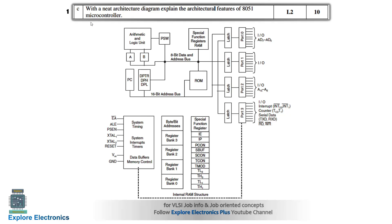The 8051 microcontroller is an 8-bit controller because whatever data is processed in this controller will be 8-bit data. You can see the ALU performs operations on 8-bit data. Registers A (accumulator) and B can hold a value of 8 bits. But the address taken for ROM as well as RAM will be 16 bits. That is why it is called an 8-bit device, and the address bus is 16-bit while the data bus is 8-bit.